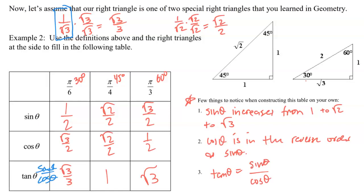To summarize the table: sine theta increases from one half to root two over two to root three over two. Cosine theta has the same values in reverse order: root three over two, root two over two, and one half. For tangent theta, just divide the sine value by the cosine value to get that last row.